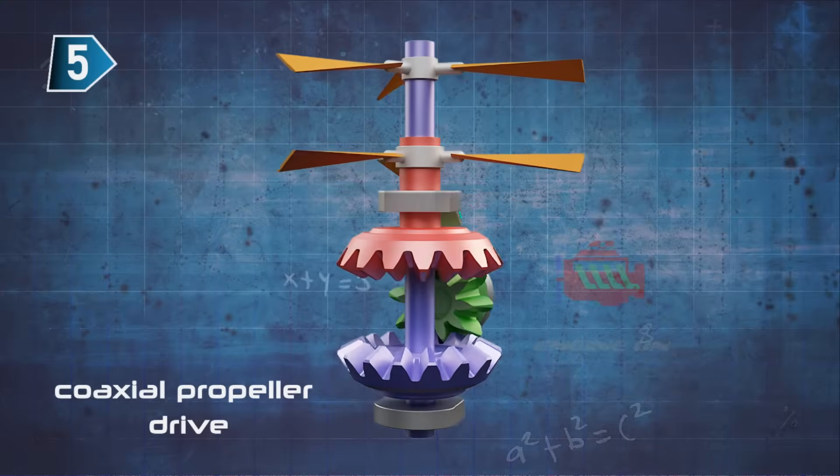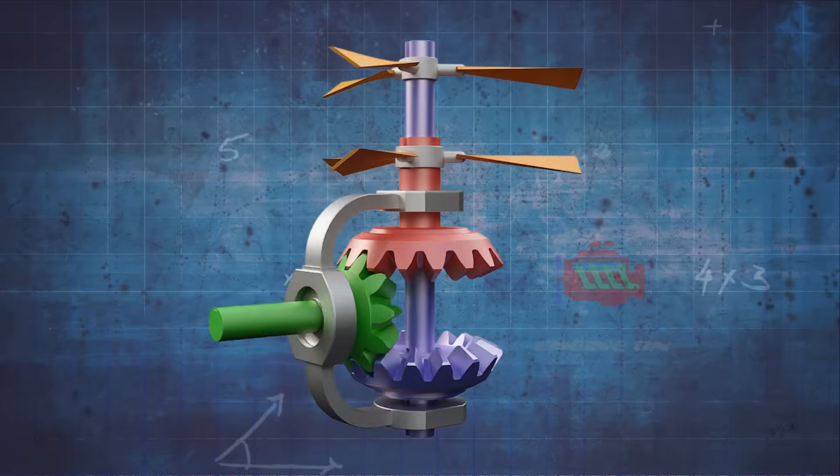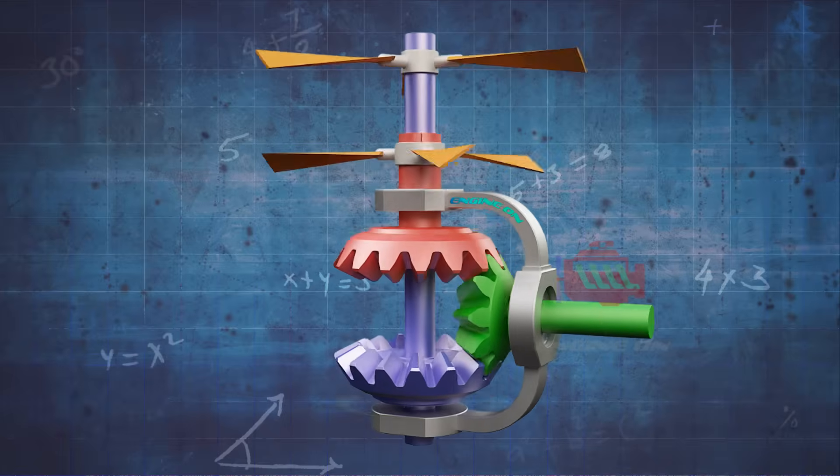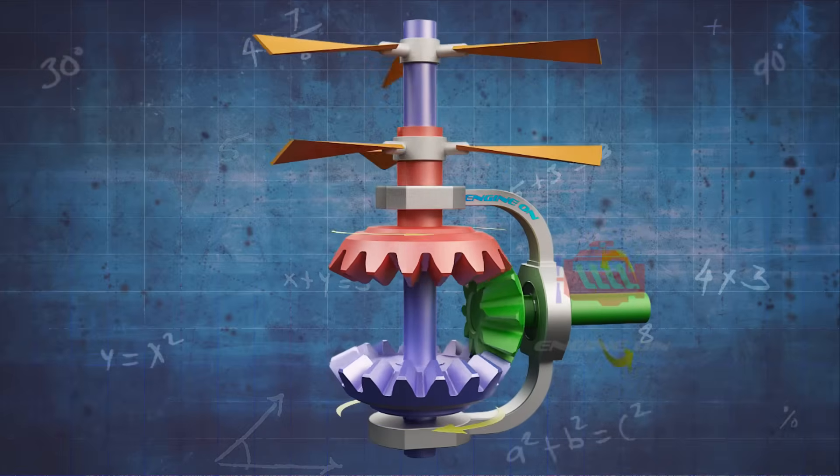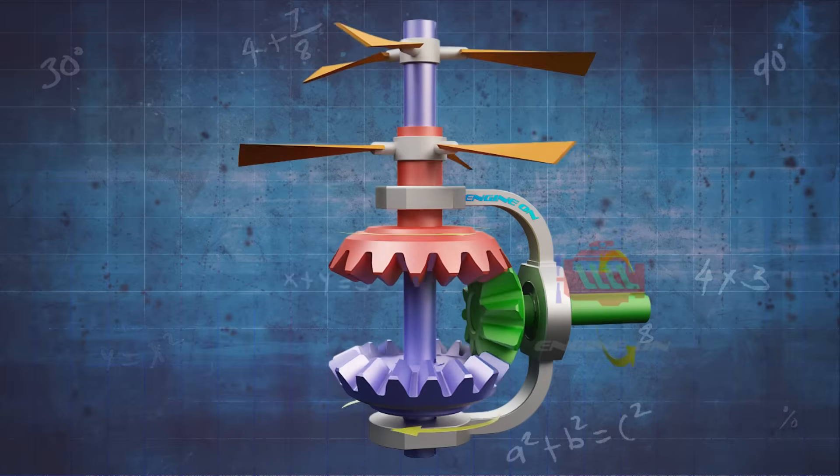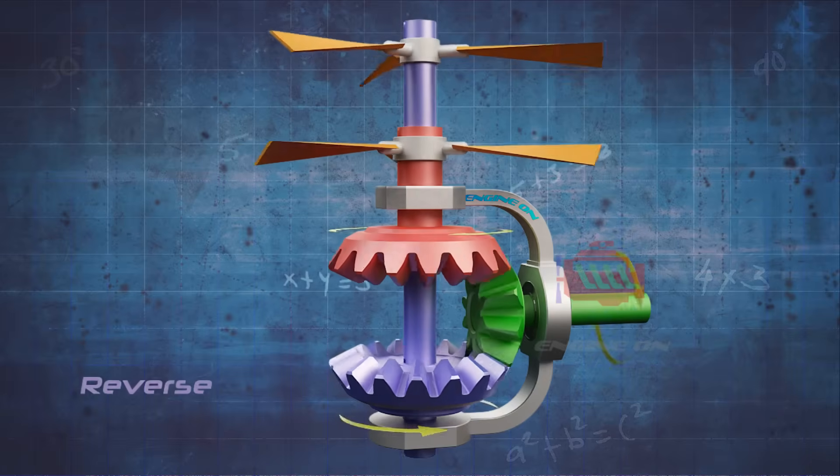A coaxial propeller drive is a system with two propellers on a single axis that spin in opposite directions. The propellers can be mounted one behind the other, and power is transferred from the engine via a planetary gear or spur gear transmission.